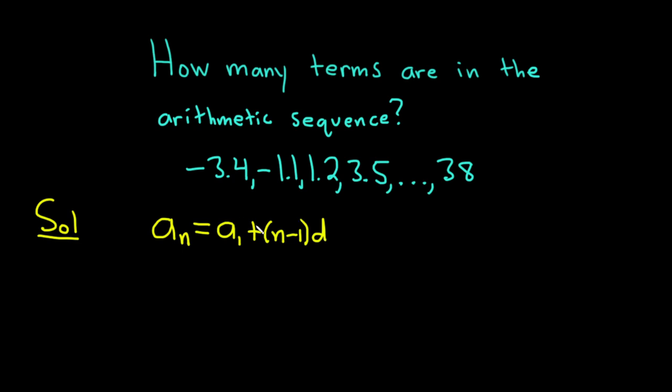a sub 1 is the first term. d is called the common difference. a sub n is the last term or the nth term.